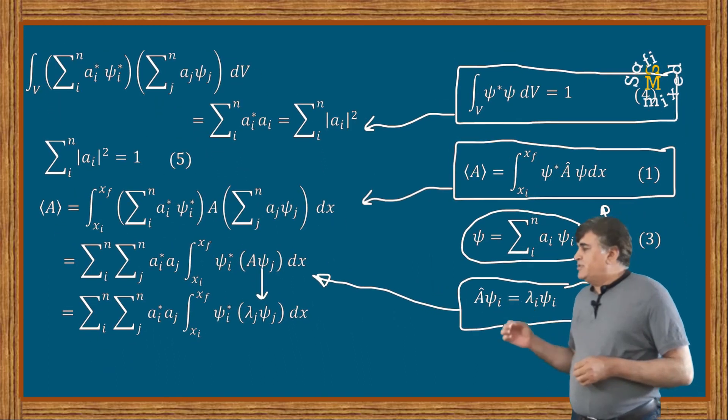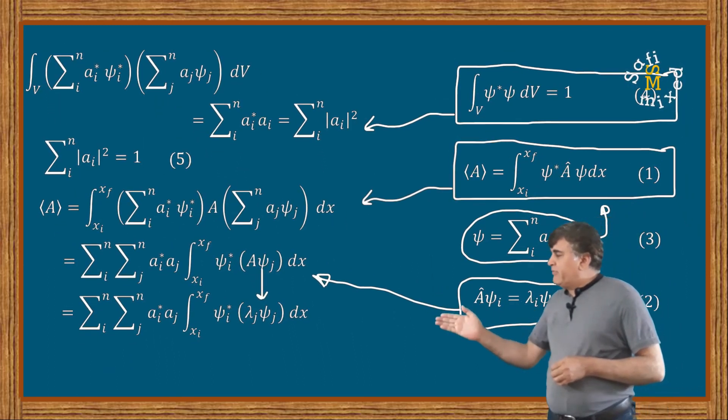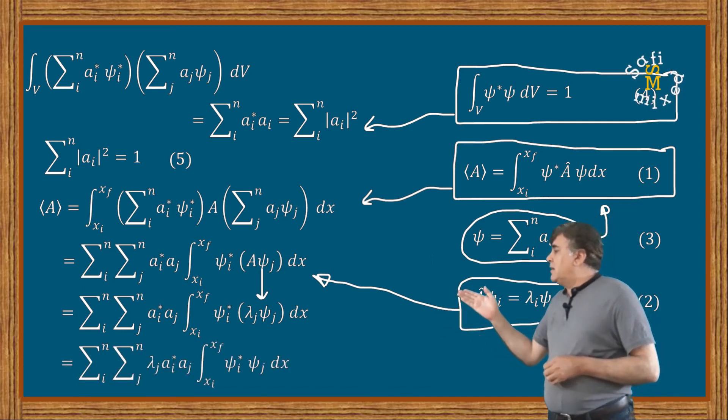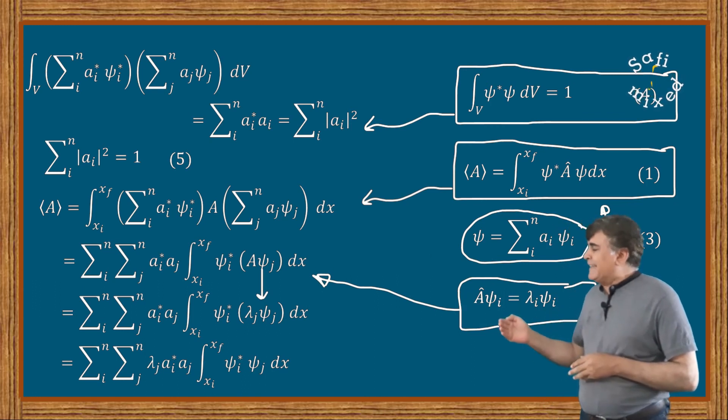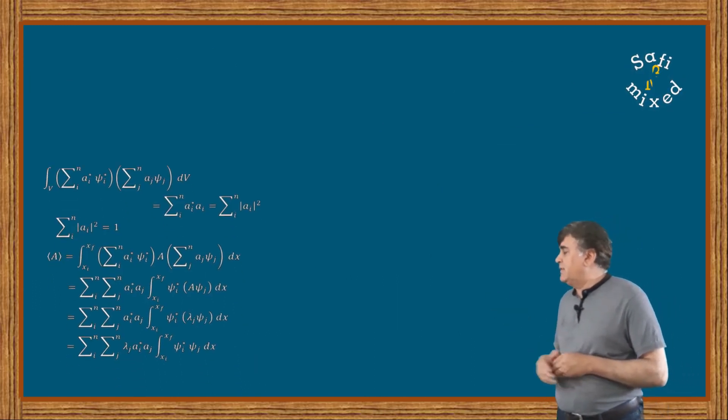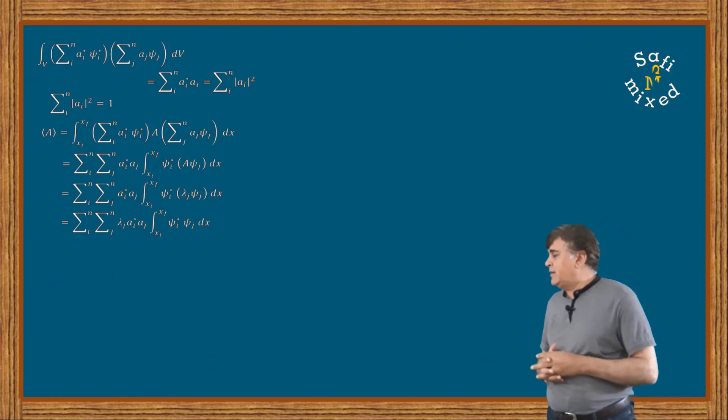And what's left is again the orthonormality condition on the wave function, which reduces the integrand to a delta function. Therefore I can write the equation finally in the form of delta function.